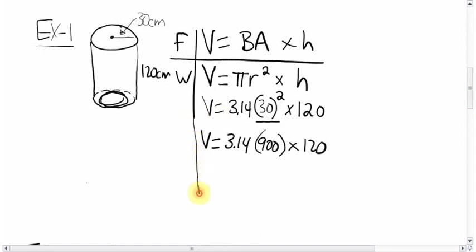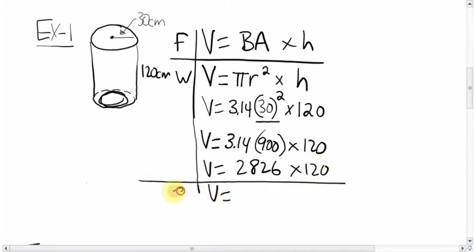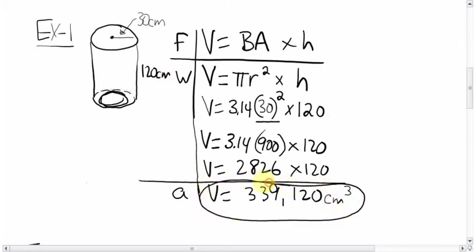Okay. Now from there, when you punch that times that, you should get 2826 times that 120. And you're going to get a final answer being 339,120. Units are centimeters, and remember, it's volume, so it's cubed. So that is our final answer for volume of the cylinder.